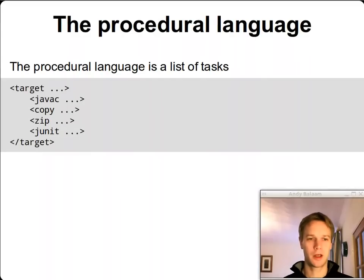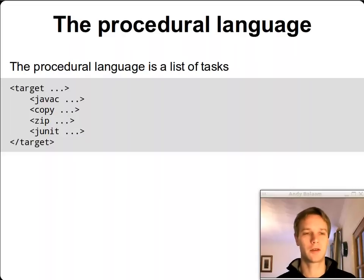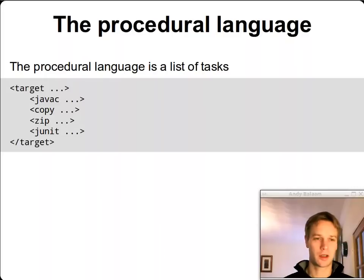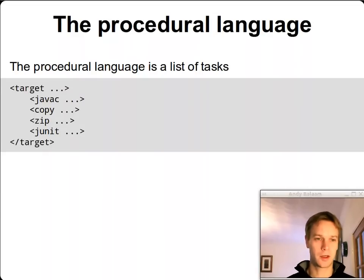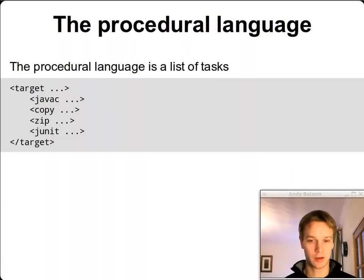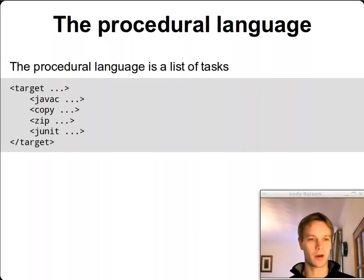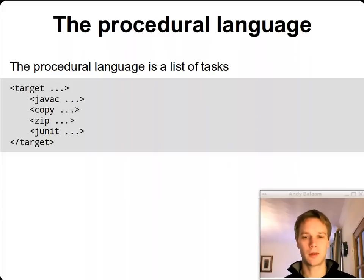And then the procedural language — here we're looking at a target. The target is part of the declarative part, but the procedural language is the stuff inside. So you have a javac task which compiles code, a copy task which copies stuff, zip which zips things up, and JUnit which runs your tests. Those — javac, copy, zip, JUnit — are called tasks. These are completely different from targets. Targets are things you can ask for when you run Ant, and they can have dependencies, whereas tasks are just commands that live inside targets.